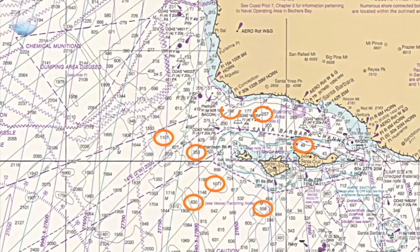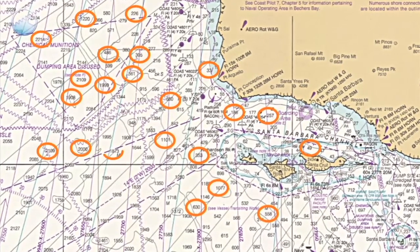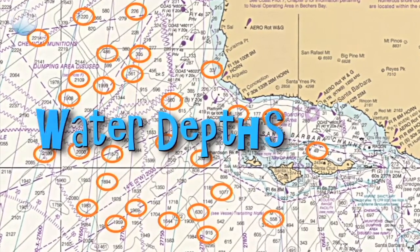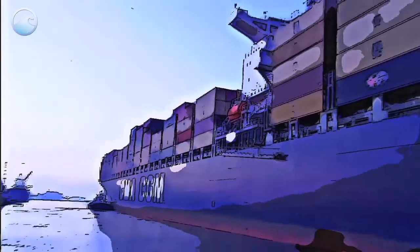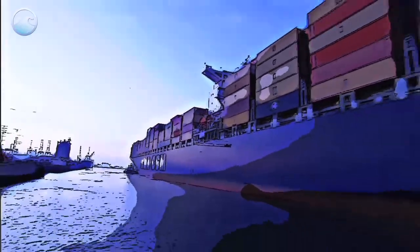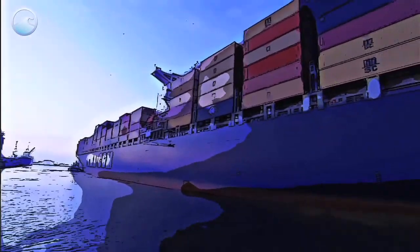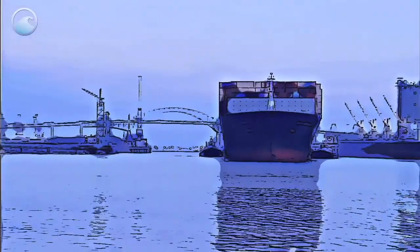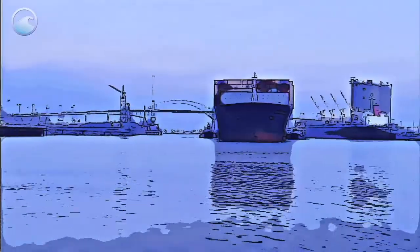You'll notice numbers all over the ocean areas on nautical charts. These are actually water depths. These numbers are especially important to large commercial vessels that need to protect the bottom of their boats in shallow waters.